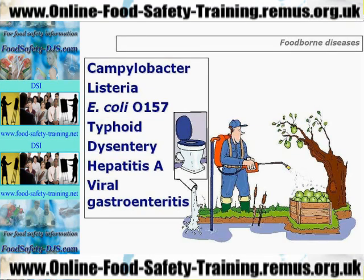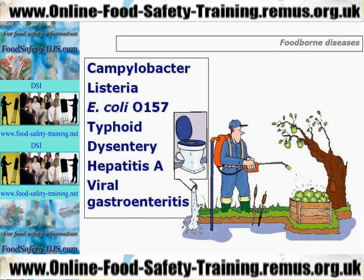The last two are viruses and not bacteria — slightly different, in as much as they are very much smaller than bacteria, and they act differently on the body in as much as they act like a parasite and become part of the host cells. Hepatitis A affects the liver. Hepatitis literally means inflammation of the liver. There are seven different types of hepatitis, from Hepatitis A right through to Hepatitis H. Hepatitis A is the only foodborne disease — all the other hepatitis variants you will get through blood infection, through using infected sharps, through sexual contact, etc.